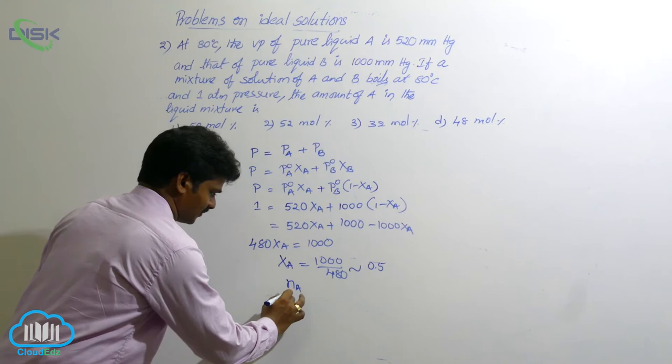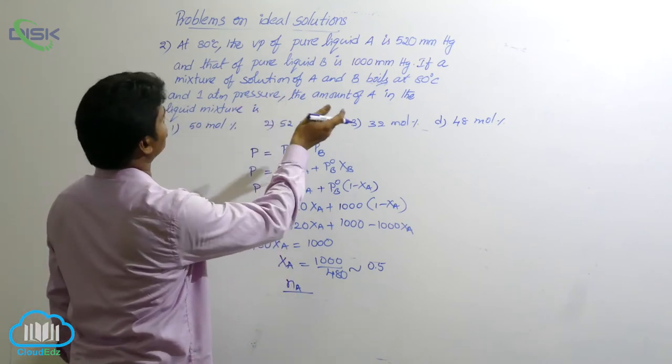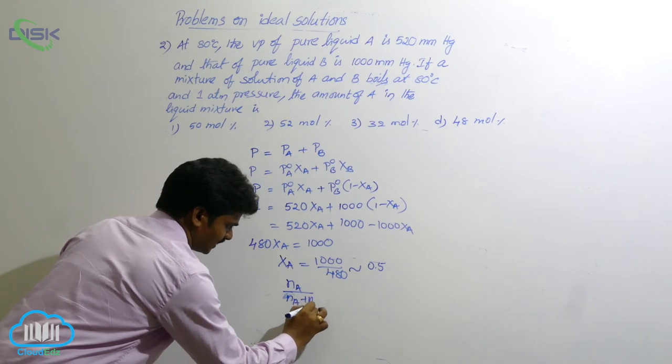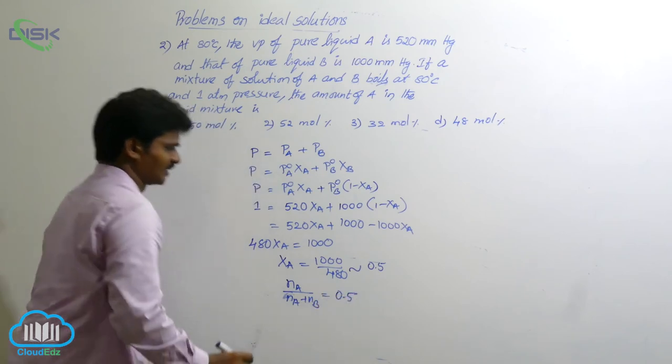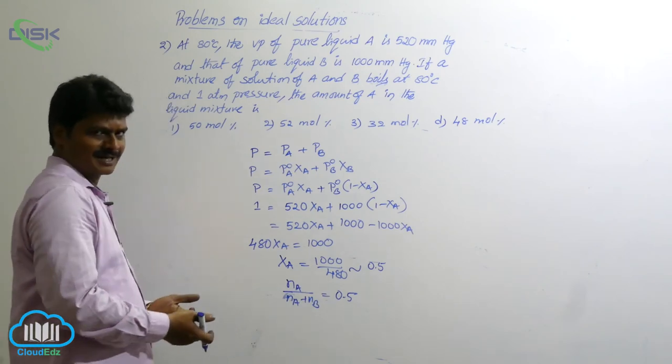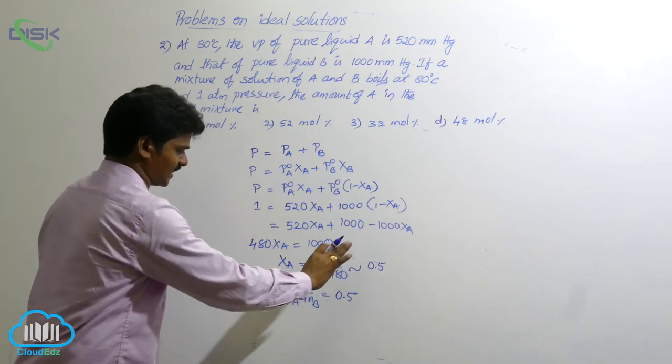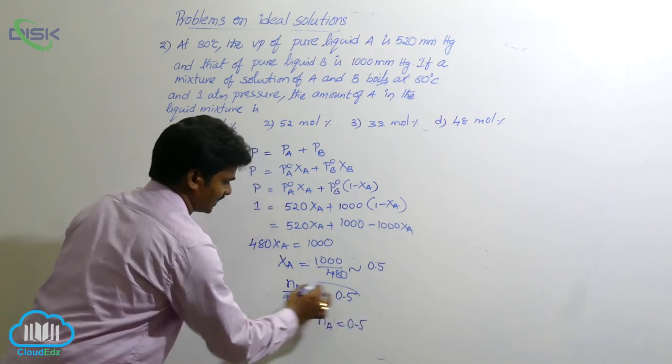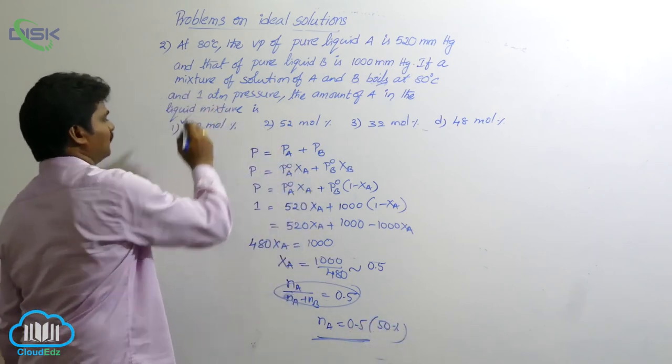xA is 0.5 means mole fraction is 50%. Number of moles of A divided by number of moles of A plus number of moles of B equals the value 0.5. So mole fraction of solute is 0.5 means mole fraction of solvent is also 0.5, because their sum equals 1. So number of moles of compound A is 0.5. 0.5 means 50%, nearly 50%.